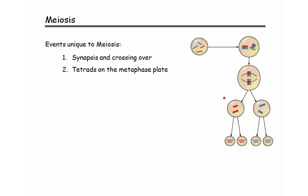Tetrads are also unique to meiosis. We see tetrads located on the metaphase plate during meiosis — specifically the metaphase one plate. Tetrads are the paired-up homologous chromosomes; the 'tetra' part of the name stands for the four chromatids they contain. We never see any tetrads at all during mitosis, let alone located on the metaphase plate.